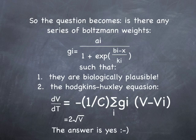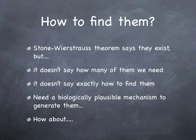So the question becomes, is there any series of Boltzmann weights like this, such that, one, they're biologically plausible, right? It makes no sense to talk about things that are totally beyond the pale here. And two, the Hodgkin-Huxley equation, which I've redrawn here, approximates to this two times the square root of v. The answer is yes to both scores, amazingly enough. And I actually verified that these are biologically plausible values that we're getting here. This neuron could actually exist.